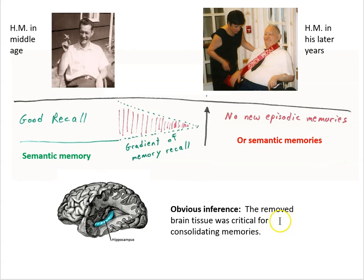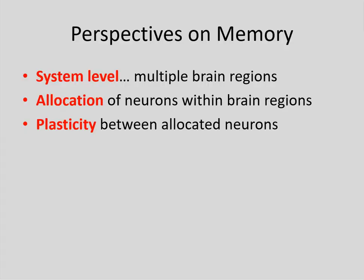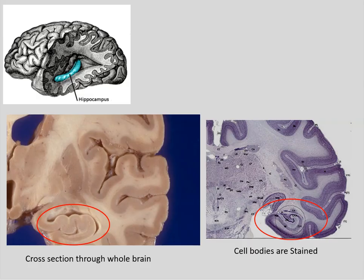The obvious inference was that the hippocampus and other structures removed in the surgery were critical for making new long-term memories. We're going to go through a story about what the brain is doing when we encode, store, and retrieve information. We'll look at the system level, since memory operates over multiple brain regions. We'll introduce the concept of allocation — certain neurons will be responsible for making memories — and plasticity, where the actual memory results from changes in the strengths of connections between neurons.